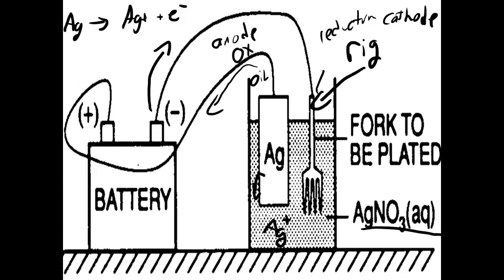And here, the Ag+ in solution are being attracted to the electrons coming into the fork, and we have Ag+ plus an electron becoming silver.